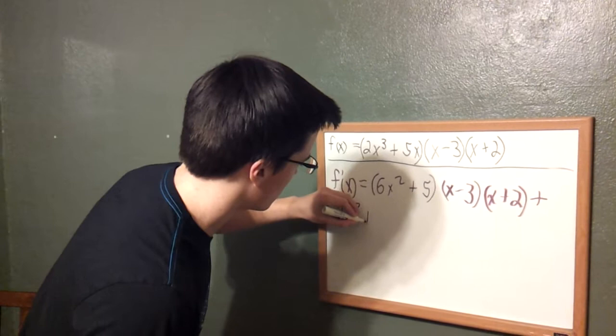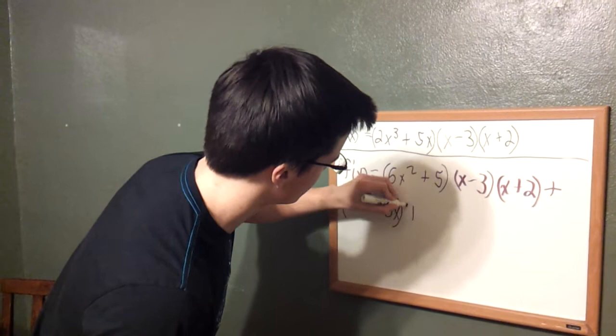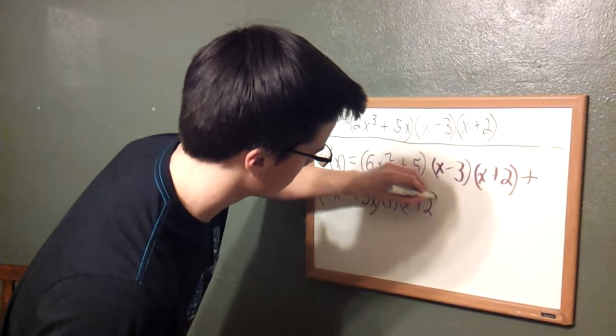So it is, rewrite the first term again. Derivative of the second is 1, and it is tagged x plus 2 on the end.